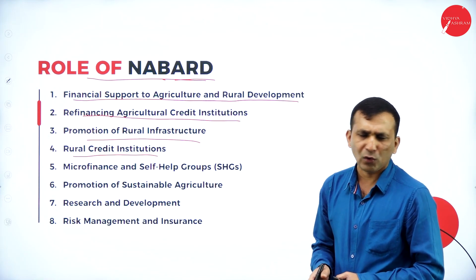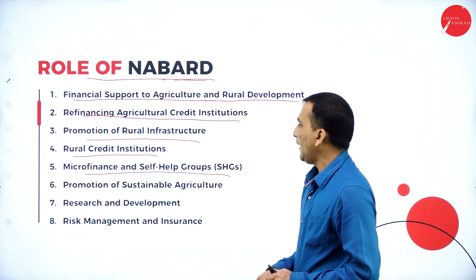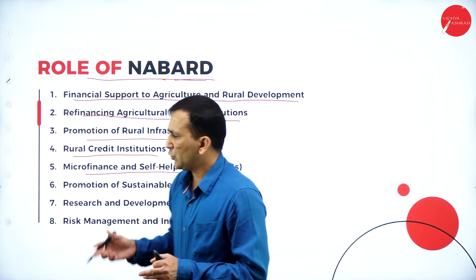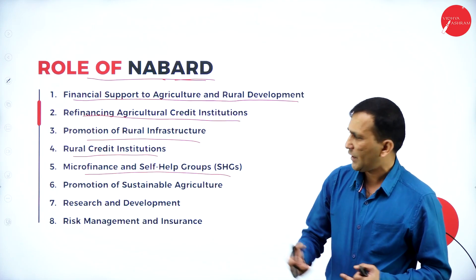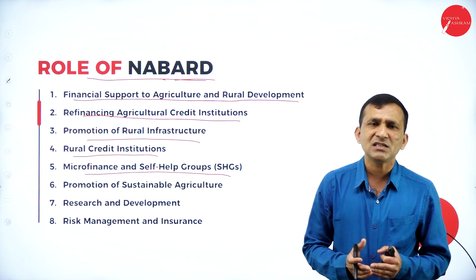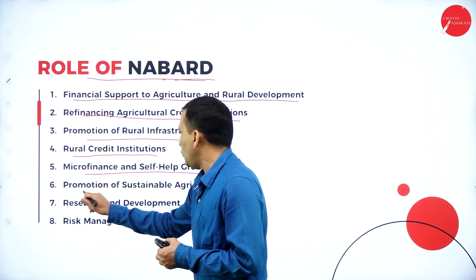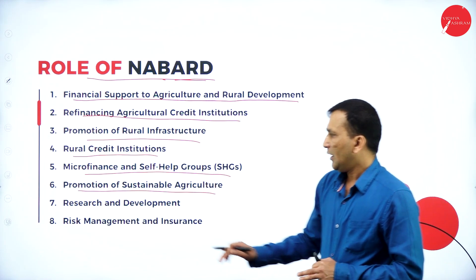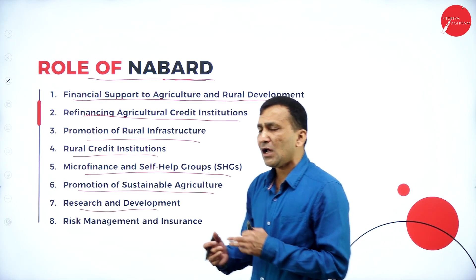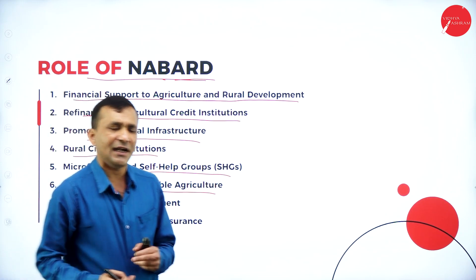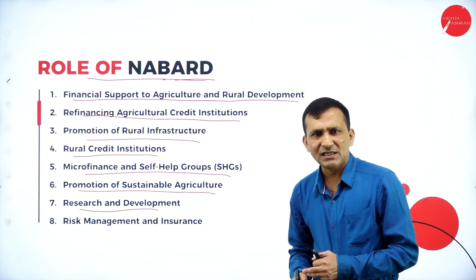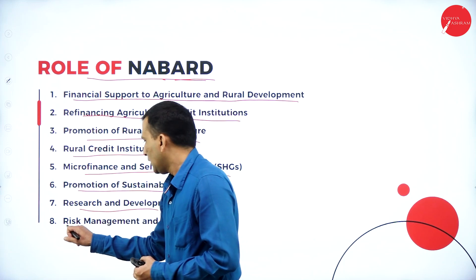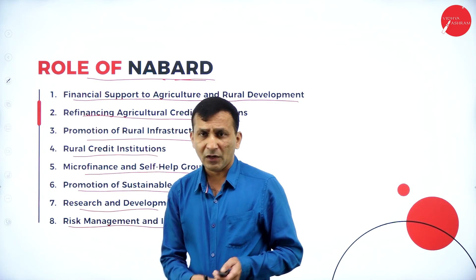Microfinance and self-help groups provide small financial support to those keen on starting their own business. Finance is very important for them to start a business. Promotion of sustainable agriculture — sustaining agricultural products is very important for any nation. Research and development: NABARD continuously searches for new developments and methods in cultivation. Risk management and insurance are also very important parts of NABARD's role.